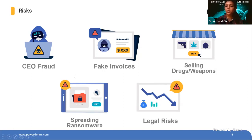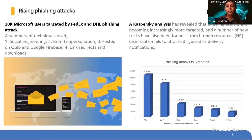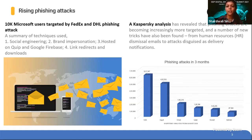Risks also include selling drugs and weapons and spreading ransomware. And when so many wrongful acts are happening on behalf of your domain, there is an obvious legal risk associated with your domain or the email ID owner. Cybercrime has exploded in the past couple of years, with major phishing attacks leading to multiple scams across the world — from WHO domain to White House domain — all major organizations have seen a surge in cybercrime during the ongoing pandemic.